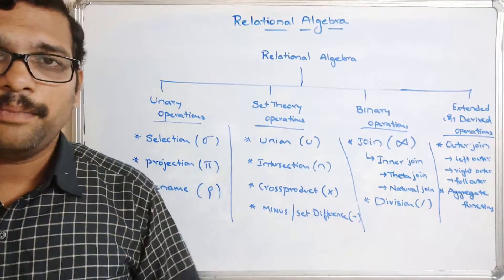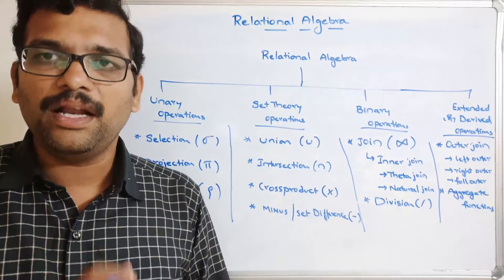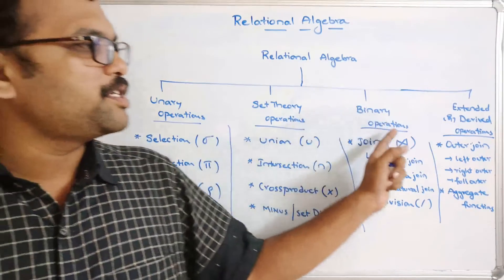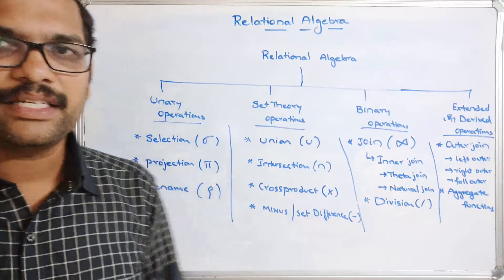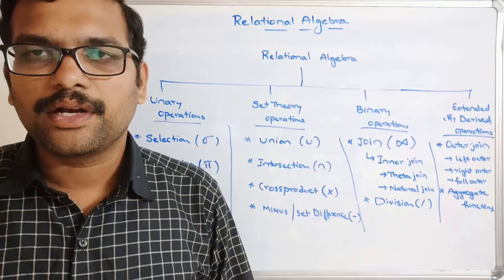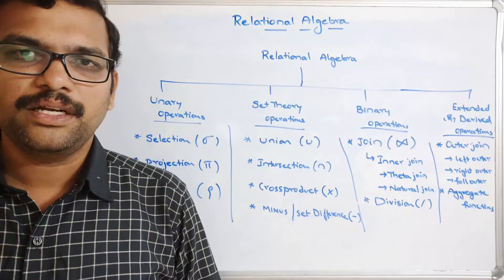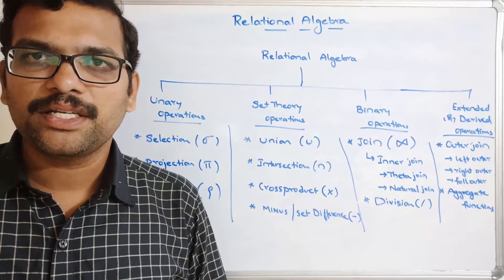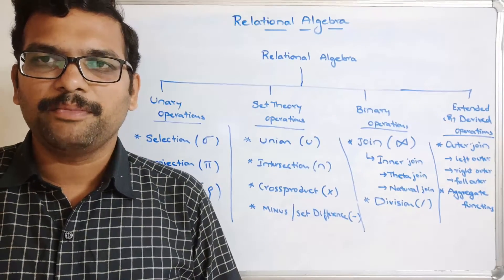So to repeat once more — in relational algebra, the input is a relation and the output is also a relation. We have unary, set theory, binary, and extended or derived operations. Let's stop here. In the next session, we'll start with the unary operations of relational algebra. If you have any doubts, feel free to post them in the comment section and I will try to clarify. If you enjoyed the session, please like, share with your friends, and don't forget to subscribe to our channel. Thanks for watching!